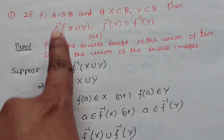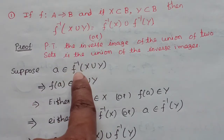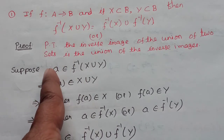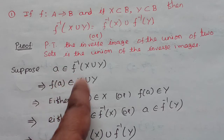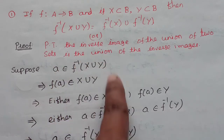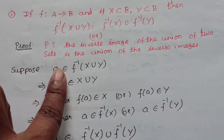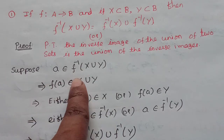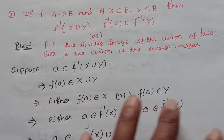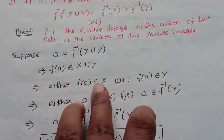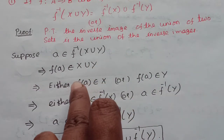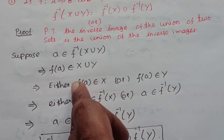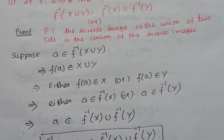Suppose we are going to prove that one element is in f inverse of X union Y. Because f of a belongs to X union Y, this one element is in X or in Y. So f of a belongs to X or f of a belongs to Y. If f of a belongs to X, then a belongs to f inverse of X.